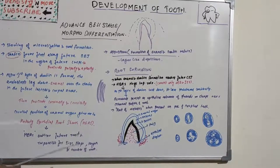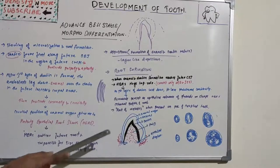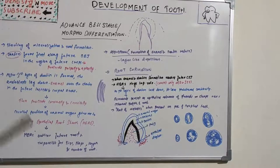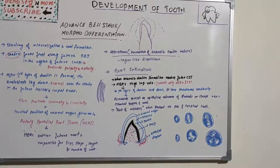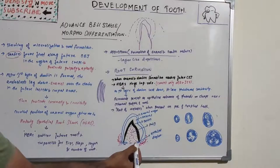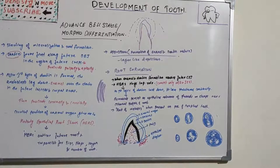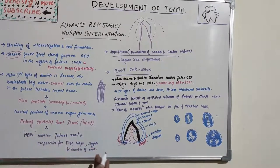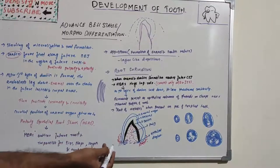The proliferation of cells of the epithelial diaphragm is accompanied by proliferation of connective tissue cells of the pulp adjacent to the diaphragm. The free end of the diaphragm does not grow into the connective tissue; instead, the epithelium proliferates coronally to the epithelial diaphragm.